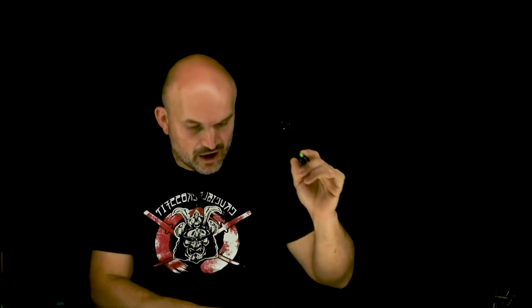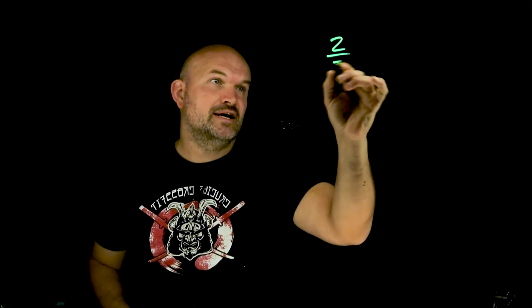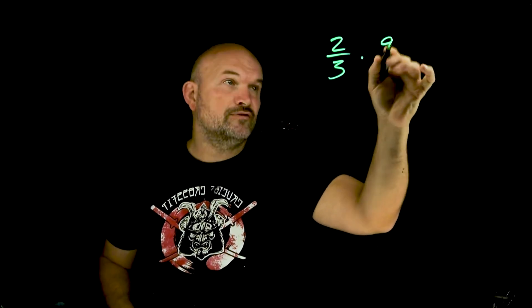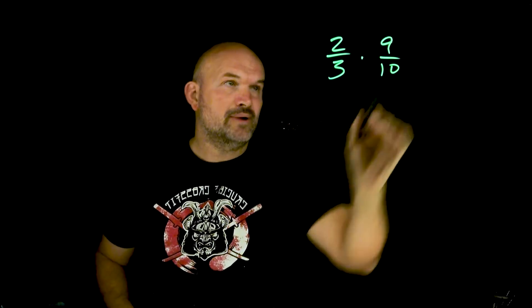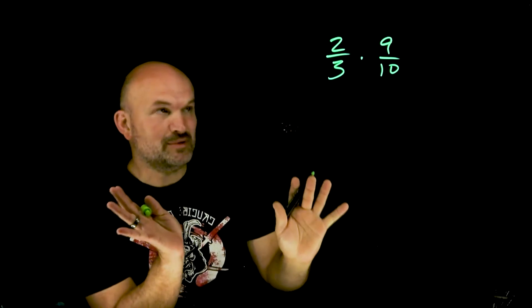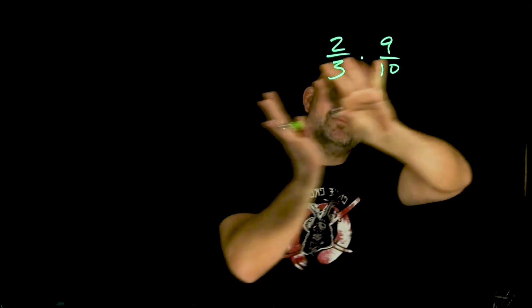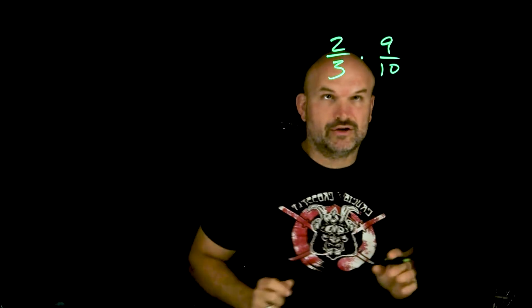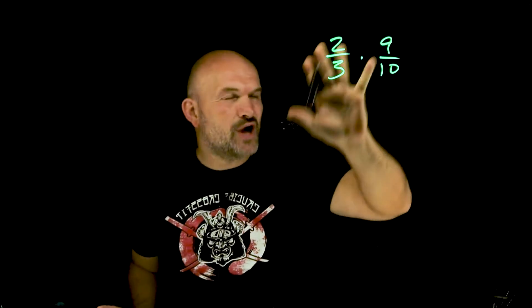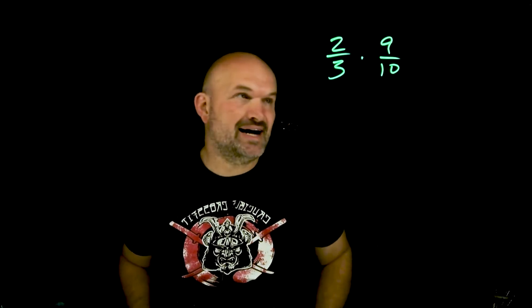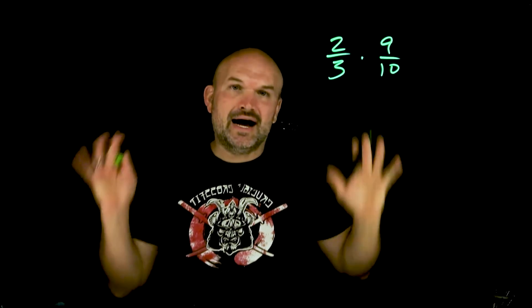The first thing to understand when multiplying rational expressions is how we multiply fractions. We're not doing any cross multiplication — when you're multiplying fractions you always multiply directly across. These numbers aren't crazy, right? You can easily multiply 2 times 9 and 3 times 10.